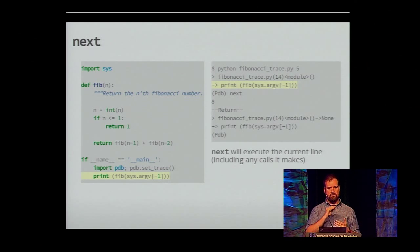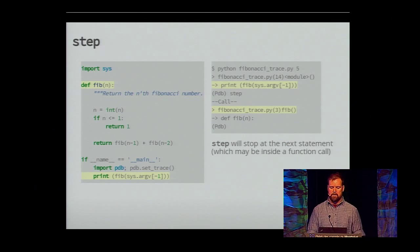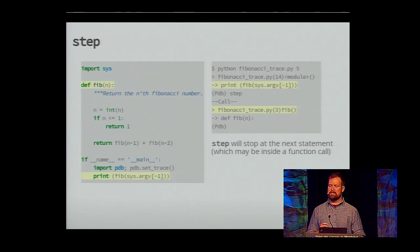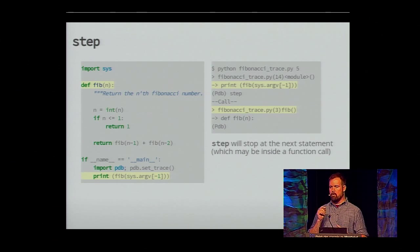Next executes the current line and any calls it might have to make. This is in contrast to step. Step also executes the current line, but stops as soon as it possibly can. So in this case, it stops inside of the Fib function. At this point, I could continue to step or next and work through that.